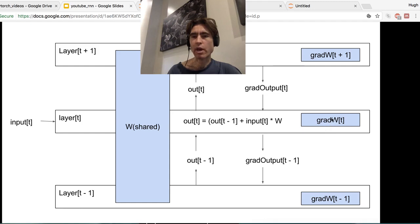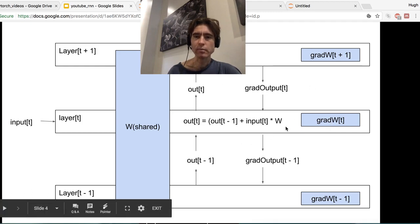And then we use that information to know how to update W so that the loss goes down. And we just do that over and over and over again. Okay, so I think that was important.